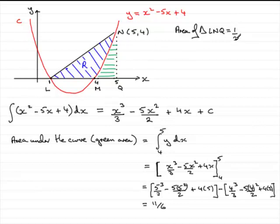So we'll have half the base, and the base length is going to go from L to Q. L had an x-coordinate of 1, we found that out in the first part of the question. And we know that the x-coordinate of Q is 5, so this distance is 4 units, so the base is 4. As for the height up here, that is 4, the y-coordinate here. And if you work that out, what you've got is 8.